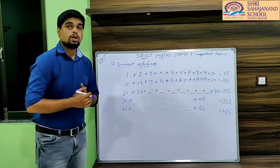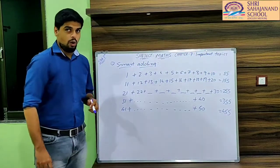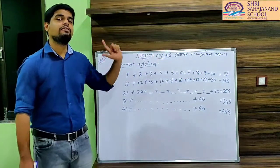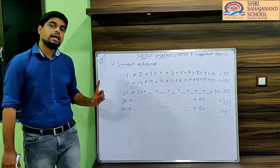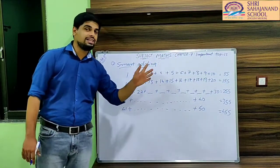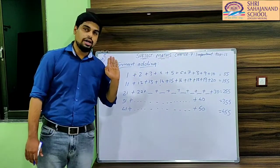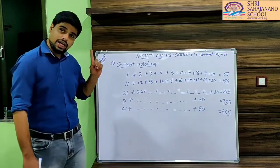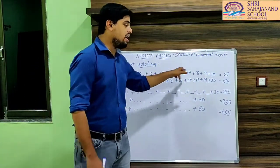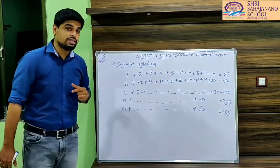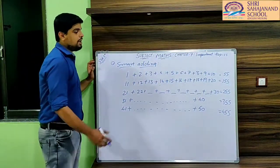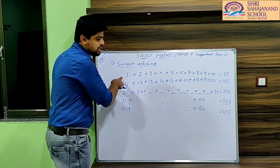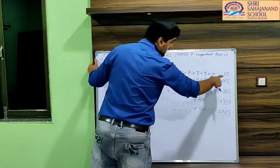The next topic is Smart Adding, where they are telling us to add 10 digits: 1 to 10, 11 to 20, 21 to 30, 31 to 40, 41 to 50, and so on up to 91 to 100. So how to add in a smart way? One way is simple addition — we add each and every digit. The smart way is that if you look carefully, there is a pattern in the answer. If we add the first 10 digits, 1 to 10, we get 55.